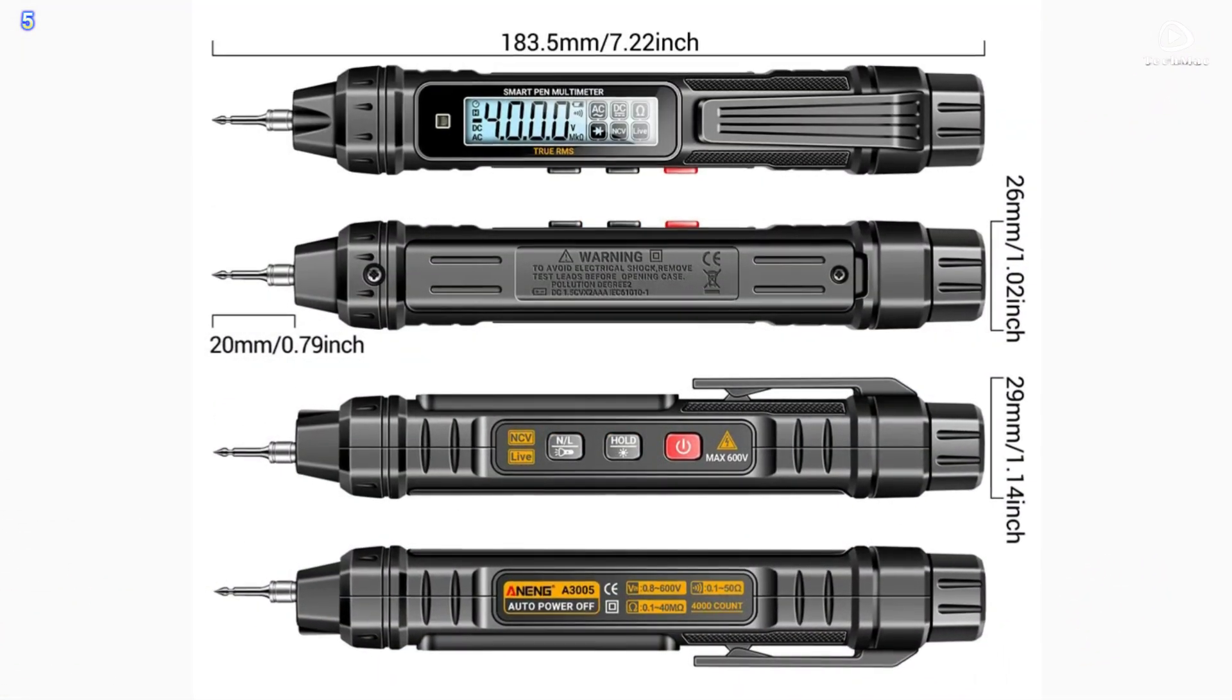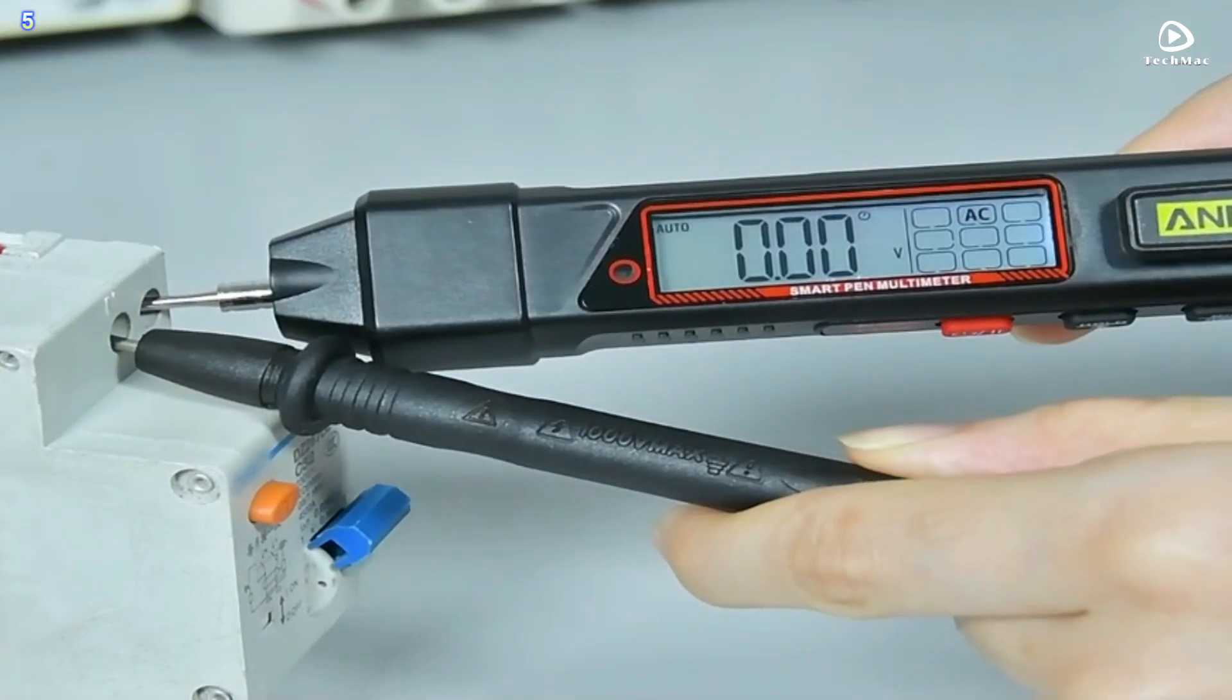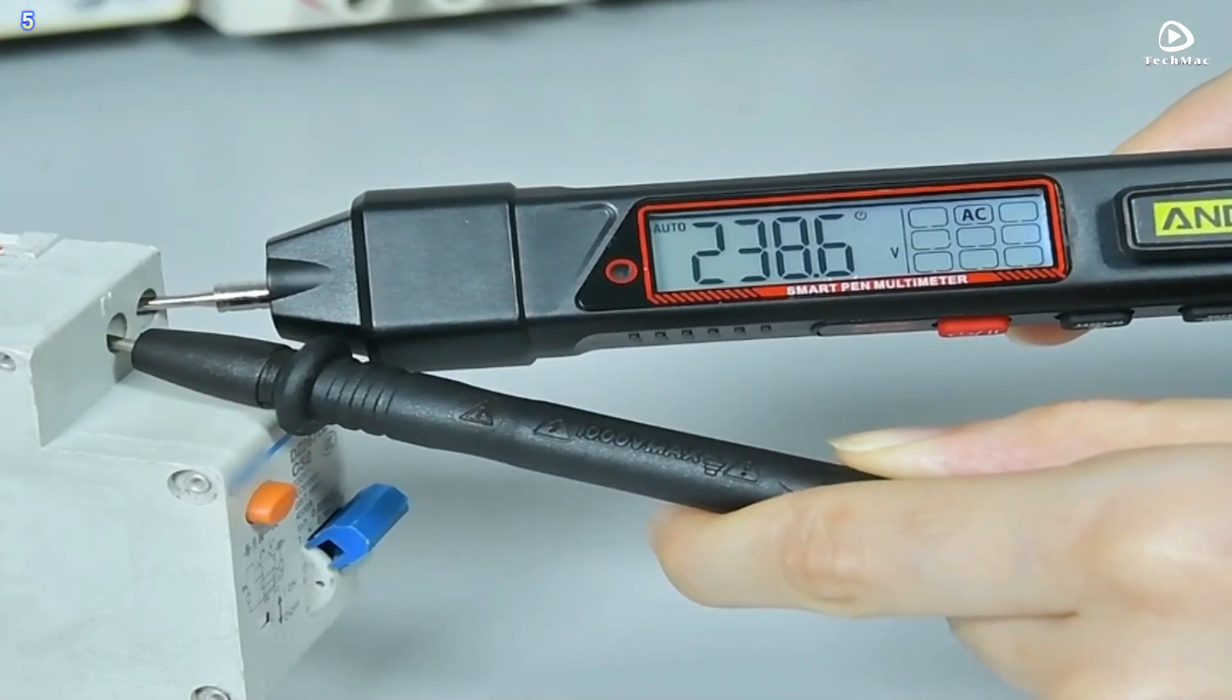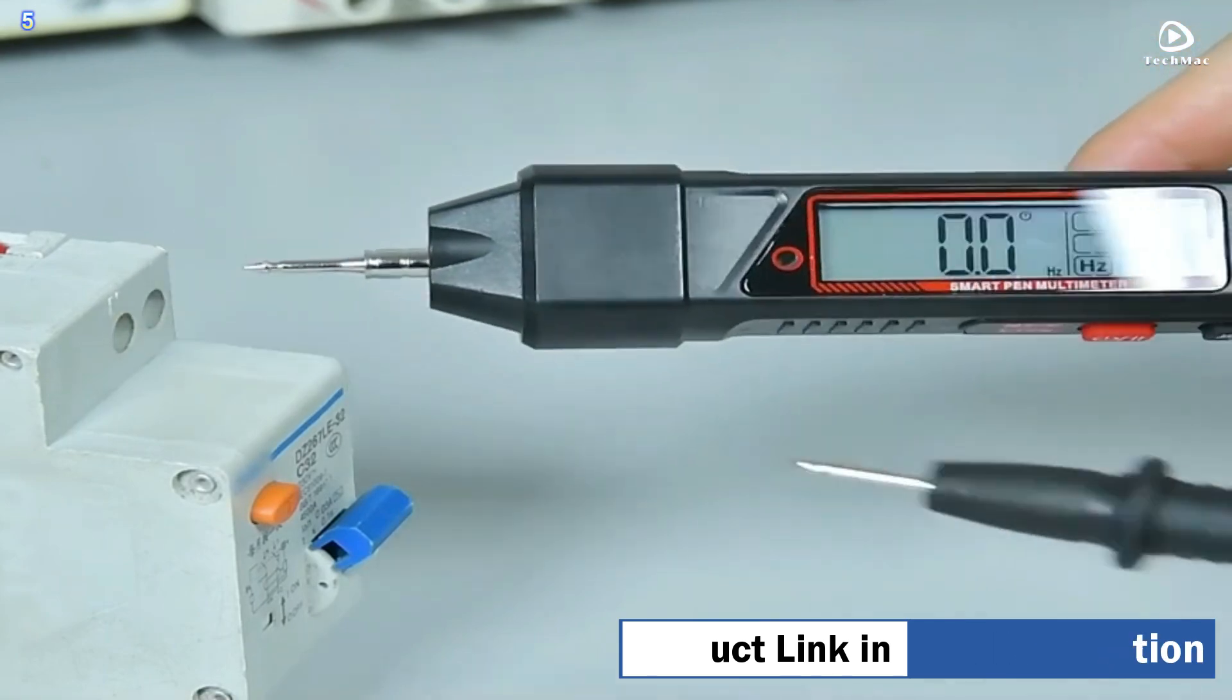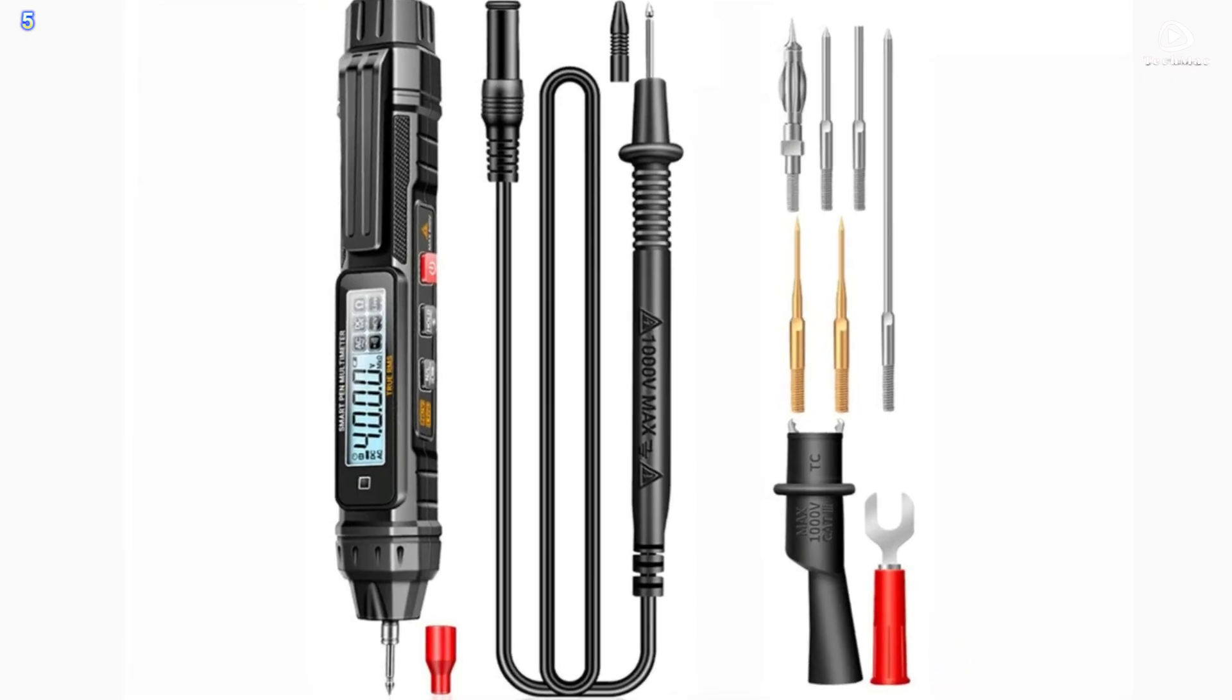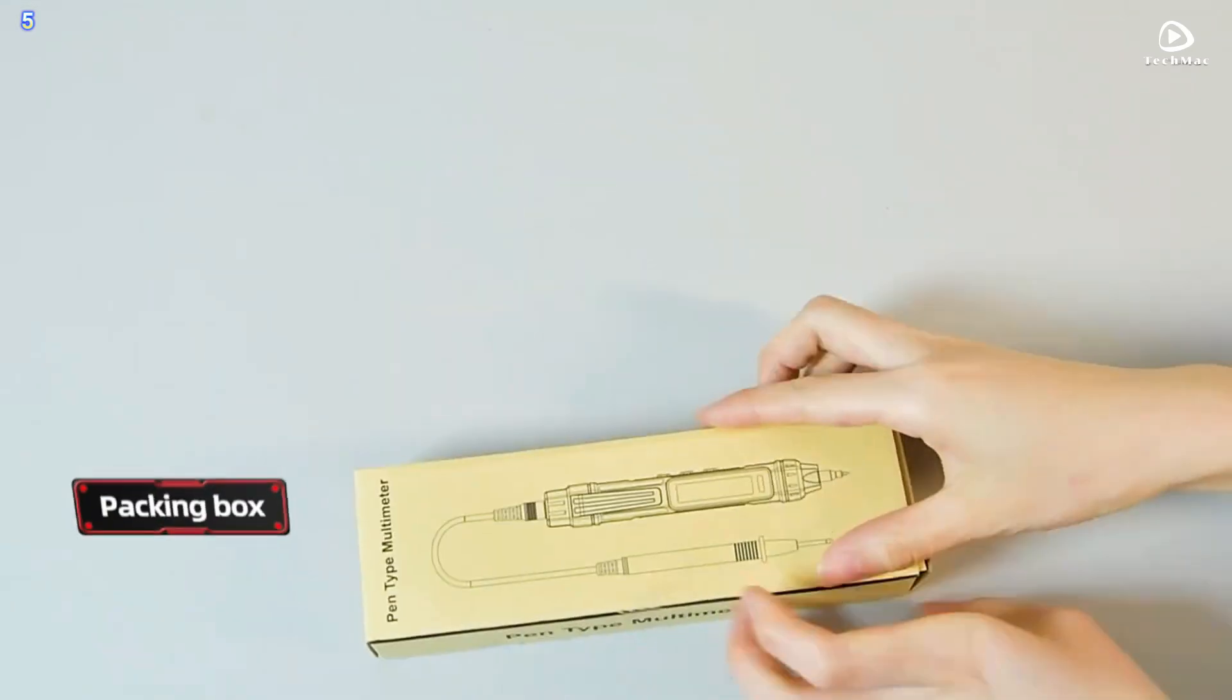Number 5: Anning A3005 digital multimeter mini pen. The Anning A3005 is incredibly portable and lightweight, making it perfect for on-the-go use. Its pen-like shape allows it to fit easily into your pocket or tool bag.